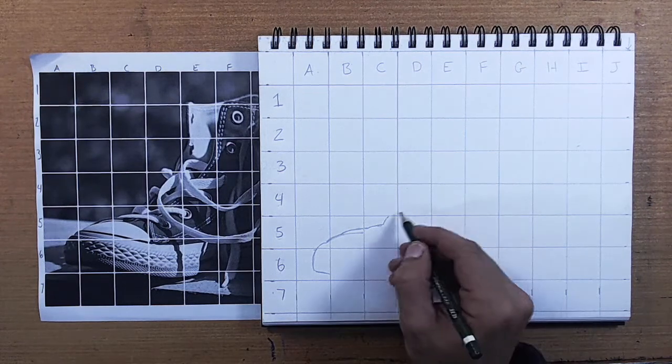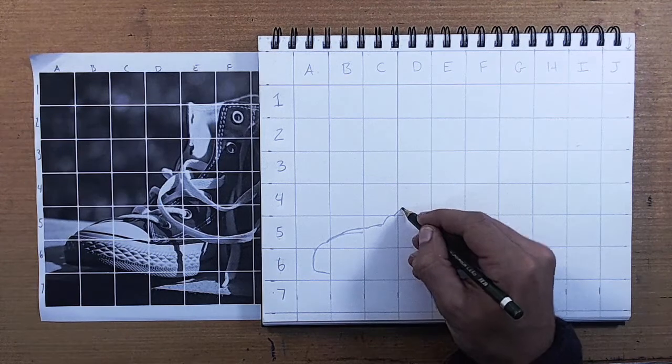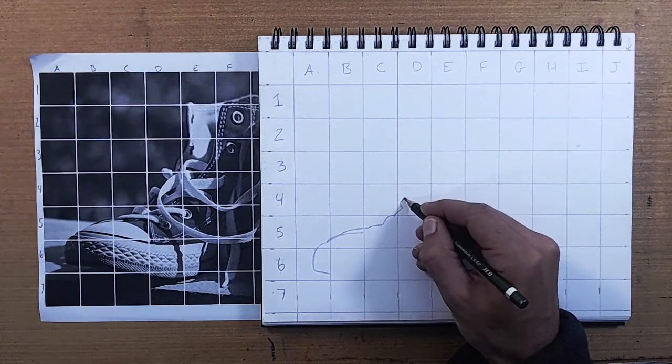After that, we can get inside of the shape of the shoes and work on shoe strings and eyelets and other smaller contours.